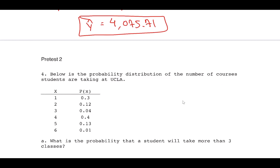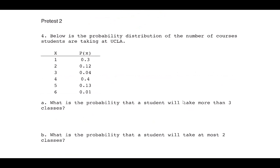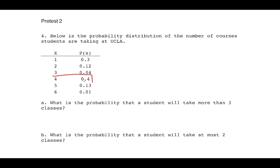Number four: below is a probability distribution of the number of courses students are taking at UCLA — one through six classes. Part A: what is the probability a student takes more than three classes? We want P(X > 3), so add P(4) + P(5) + P(6) = 0.40 + 0.13 + 0.01 = 0.54.